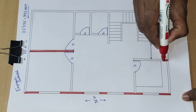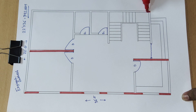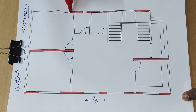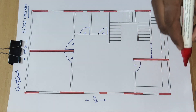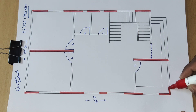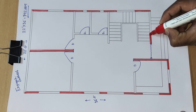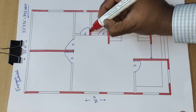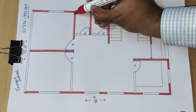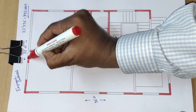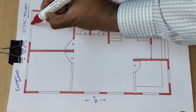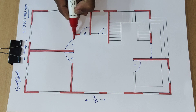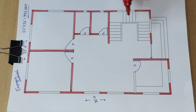Here we have the internal and outer partition wall — a 5-inch wall. One advantage of using a 5-inch internal wall is that the area inside the rooms will be larger, because we are keeping less space occupied by the wall.